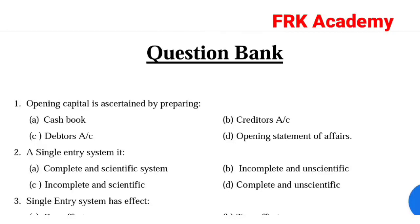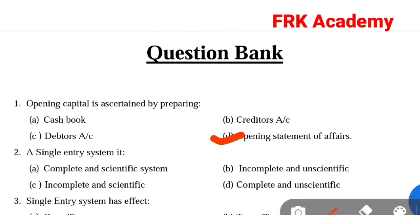First question: Opening capital is ascertained by preparing. Option A: cash book. Option B: creditors account. Option C: debtors account. Option D: opening statement of affairs. Answer: Option D, opening statement of affairs.